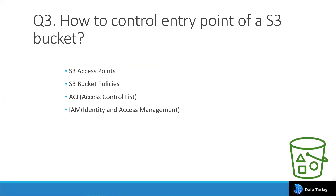Starting with IAM — AWS Identity and Access Management — you can create groups, roles, and users to control and grant proper access to S3 data. Another option is ACL, Access Control List, which provides proper access control to S3 data and the folders kept inside a bucket.